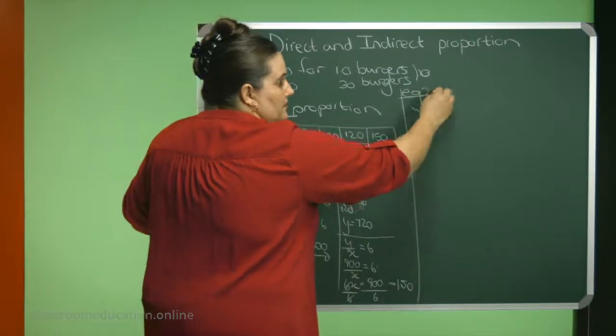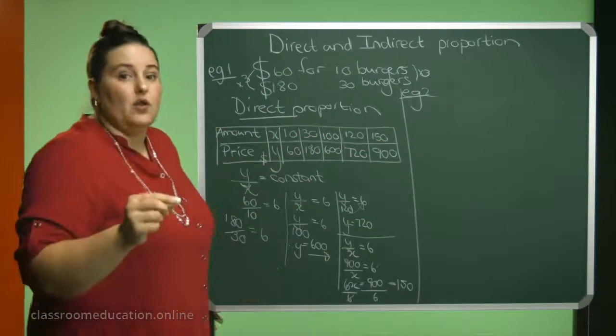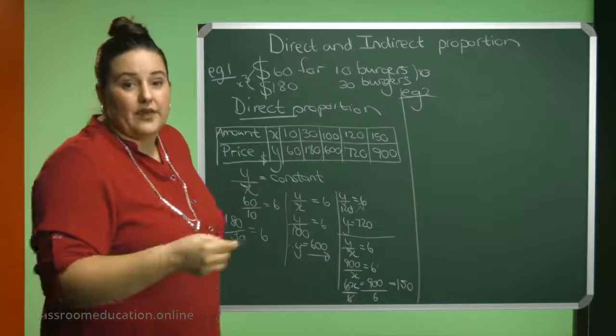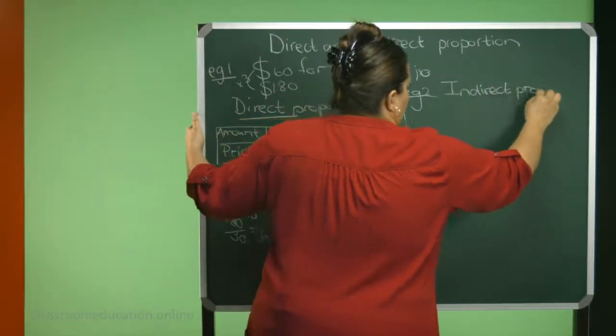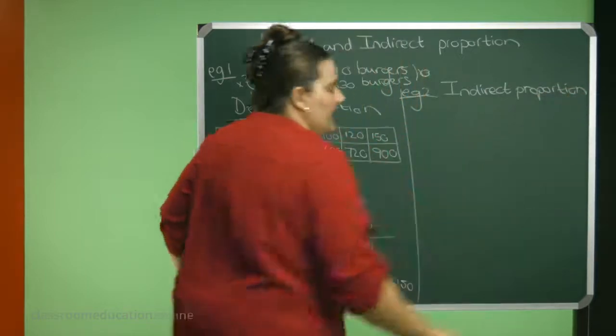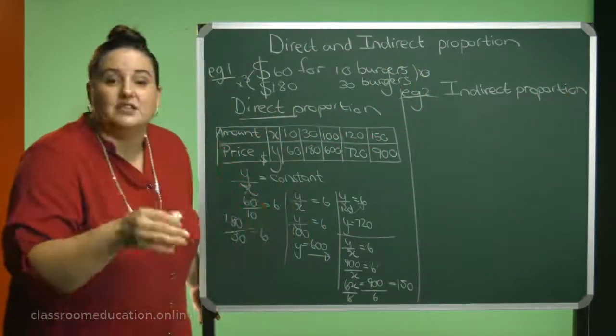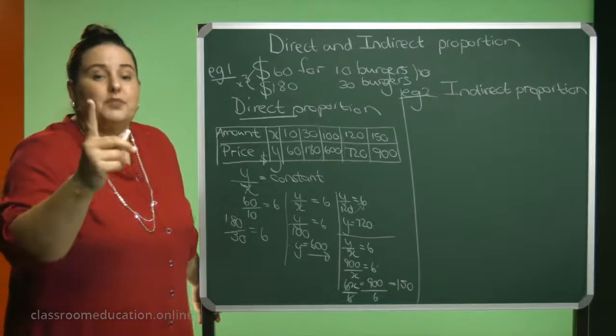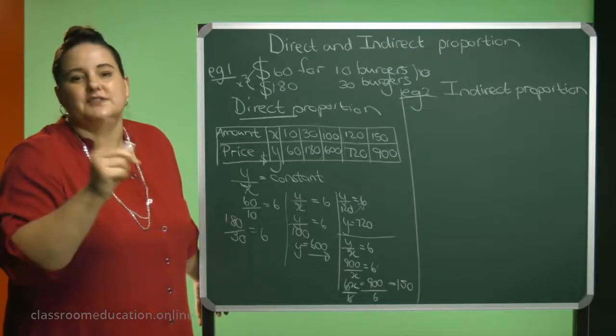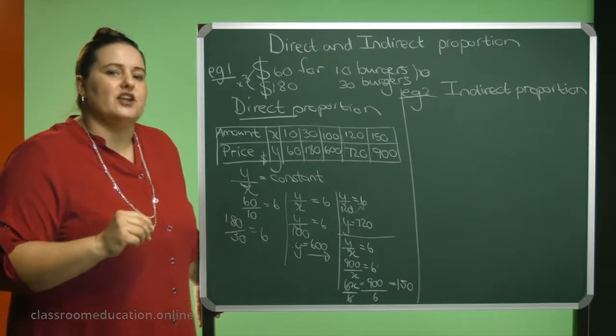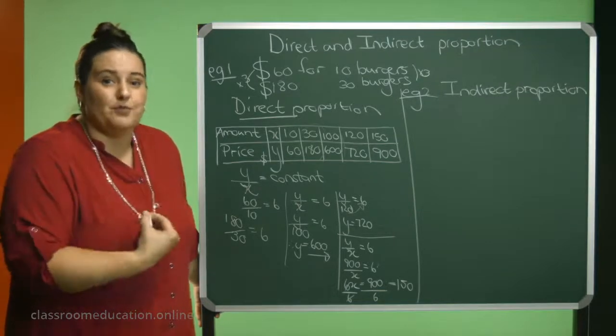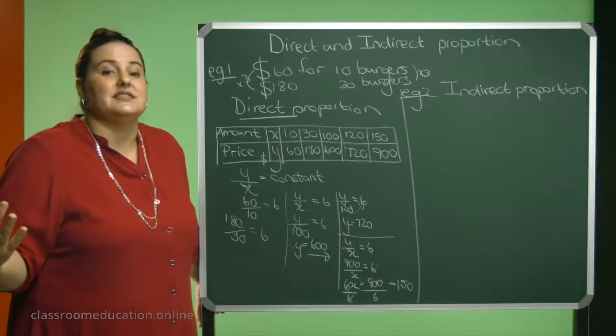Example 2. And this example will all be about indirect proportion. Let's say you want to paint your house. And for you as one person, it takes 12 days to paint your house. So if you can convince a friend to come and help you paint, how long will you guys take?